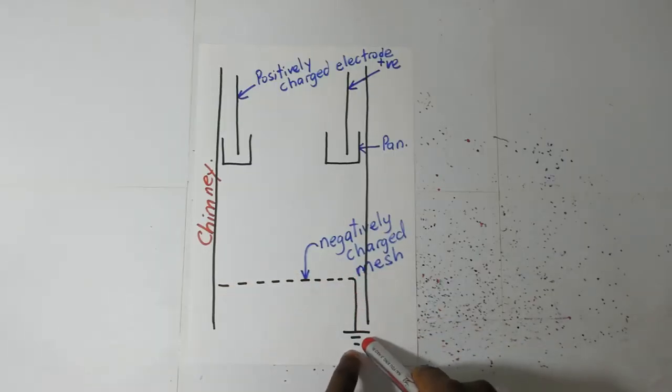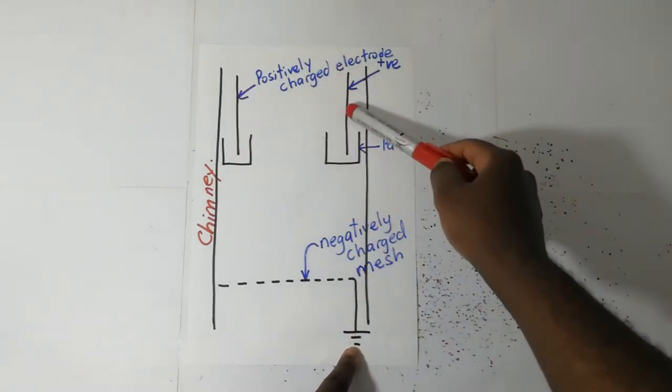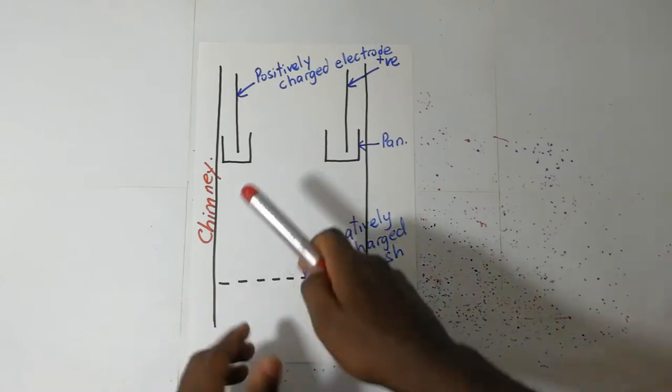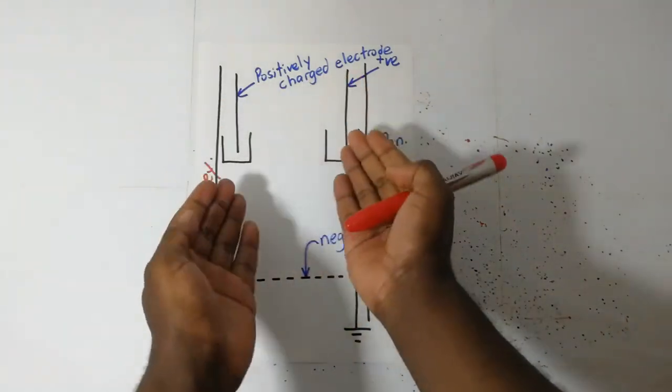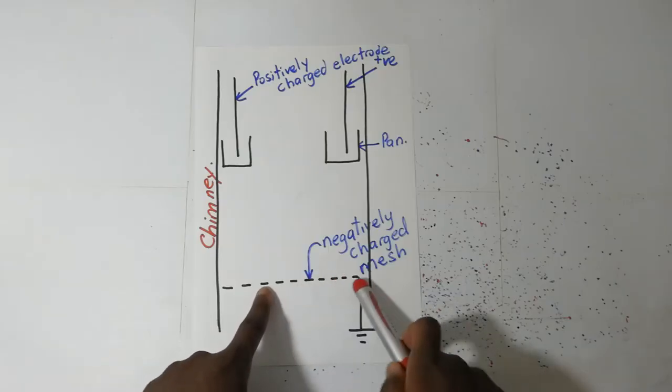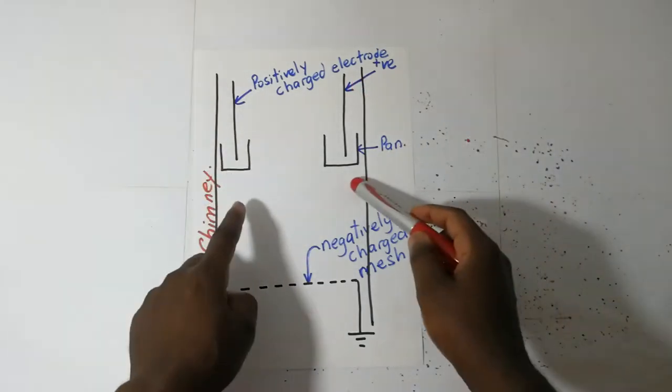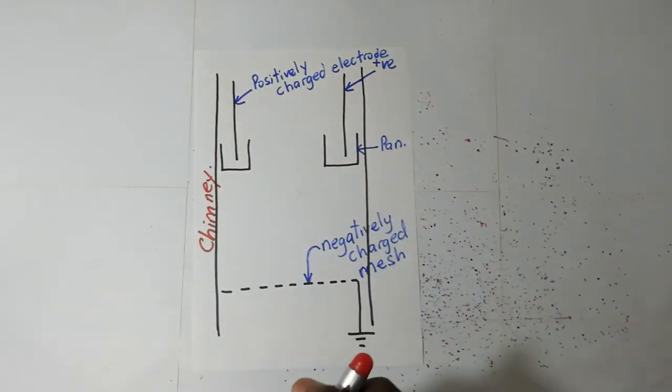This mesh you're seeing here is connected to a negative potential, and these electrodes here are like a foil but round. They are connected to a positive electrode. So in other words, this mesh is negatively charged and this is positively charged.